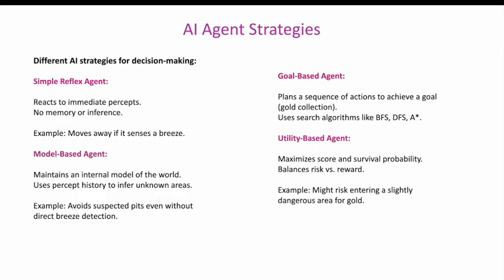AI agent strategies for decision-making: A Simple Reflex Agent reacts to immediate percepts with no memory or inference — for example, it moves away if it senses a breeze. A Model-Based Agent maintains an internal model of the world and uses percept history to infer unknown areas, for example avoiding suspected pits even without direct breeze detection. A Goal-Based Agent plans a sequence of actions for gold collection using search algorithms like BFS, DFS, and A*. A Utility-Based Agent maximizes score and survival probability, balancing risk versus reward — for example, it might risk entering a slightly dangerous area for gold.